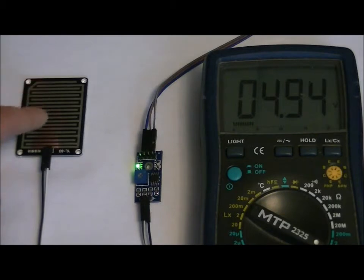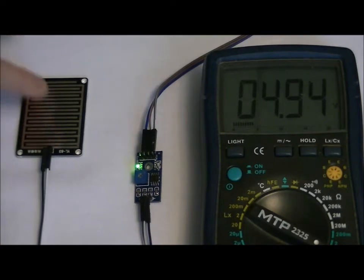The rain detector is essentially a variable resistor. The resistance changes based on how much moisture is touching it. That pattern is actually on both sides.